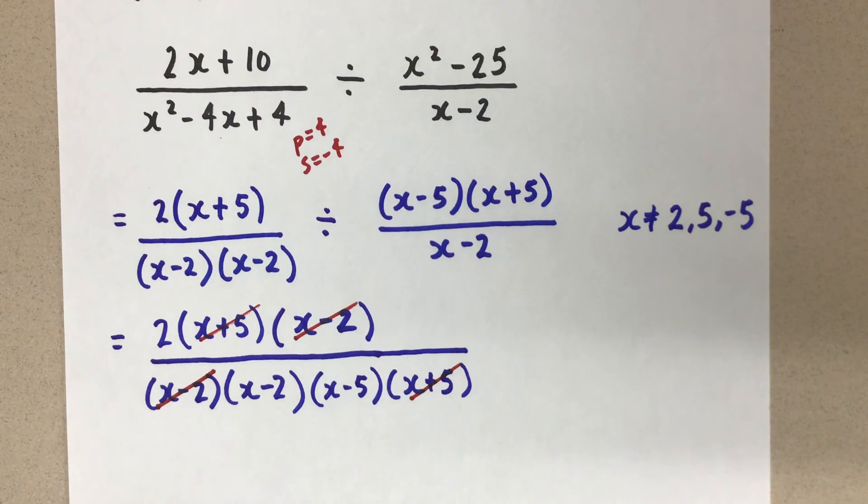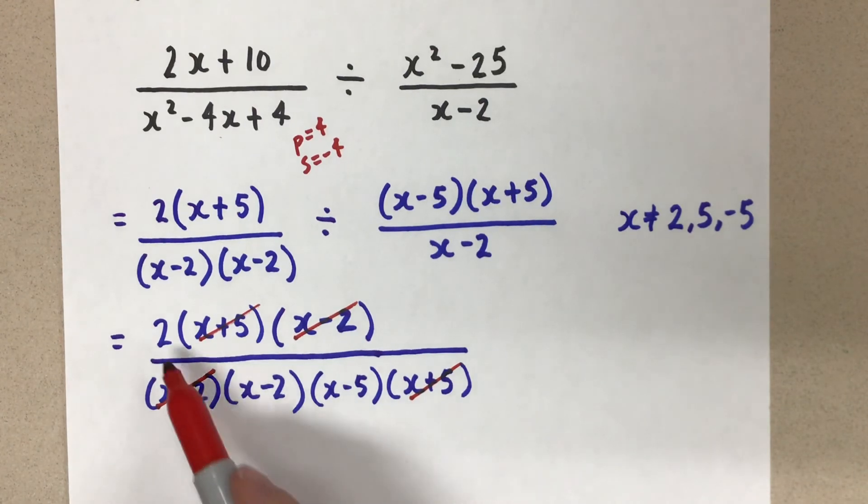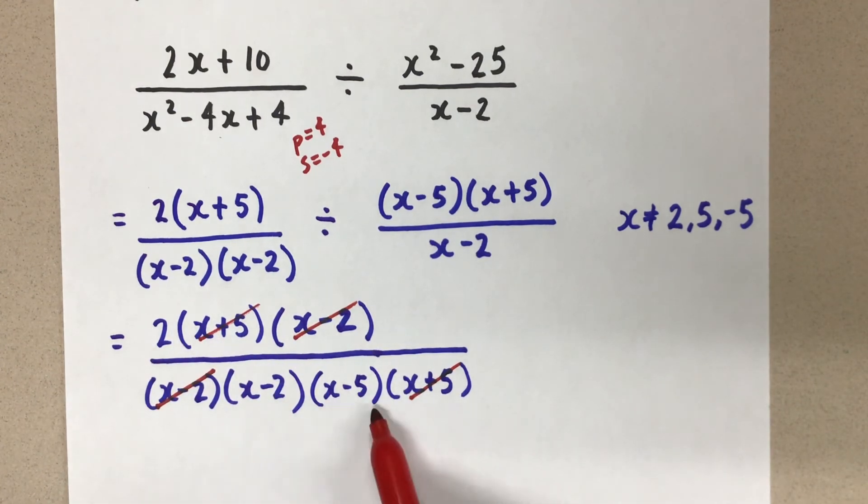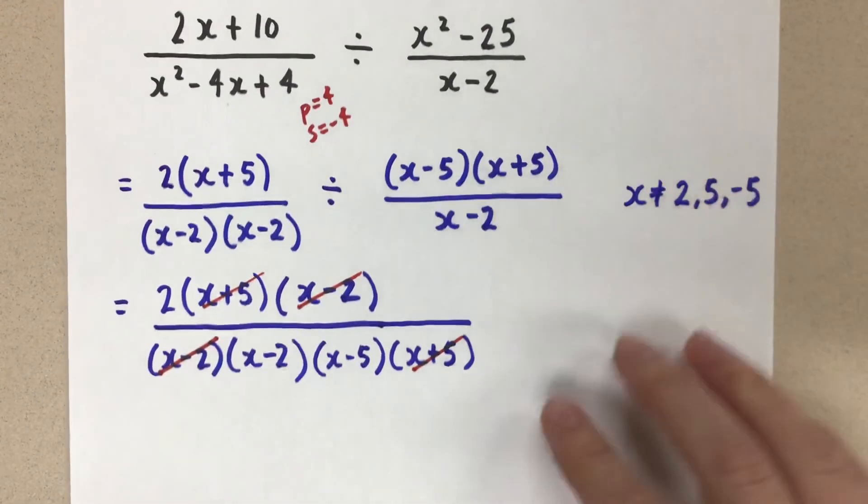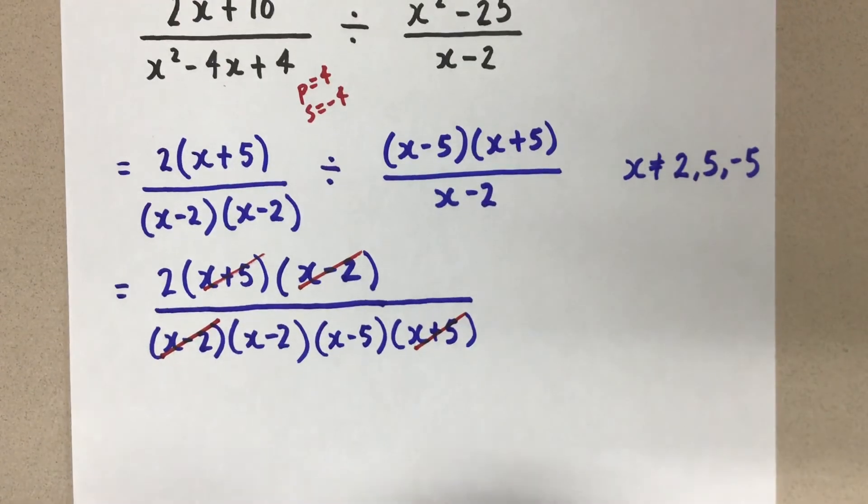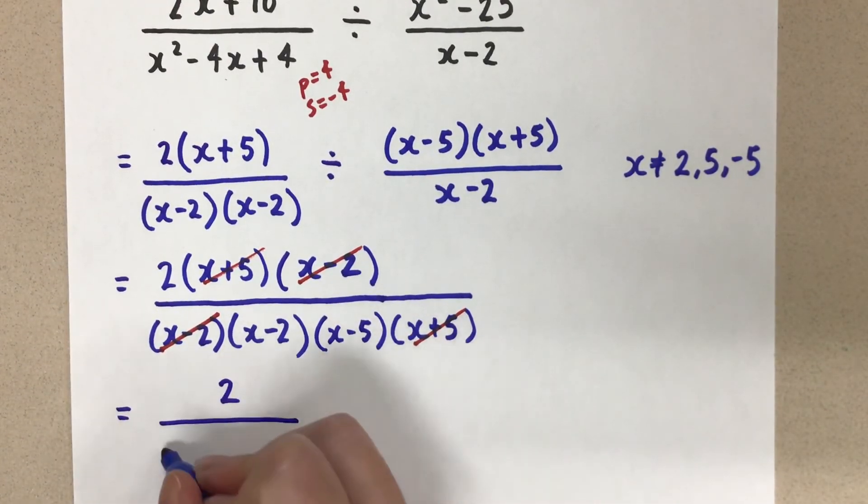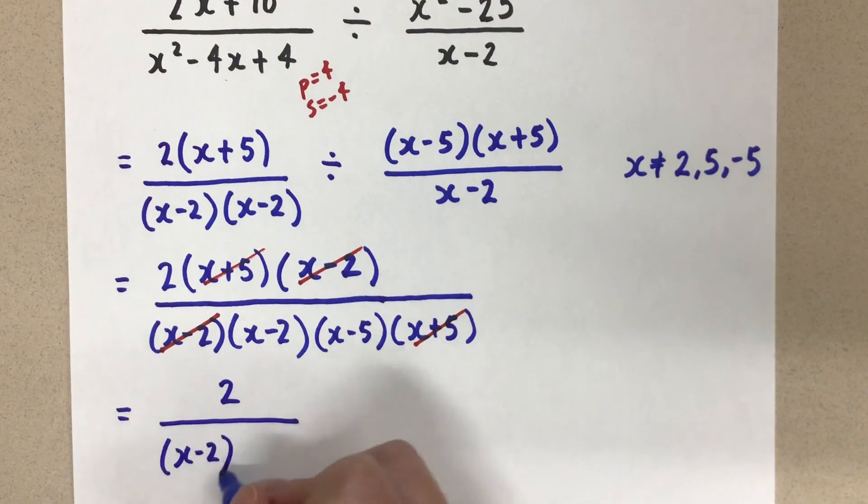And the only thing that's left in the numerator is that 2. And in the denominator, we have this factor and this factor. So let's rewrite our final expression. 2 in the numerator and in the denominator, x minus 2 and x minus 5, like this.